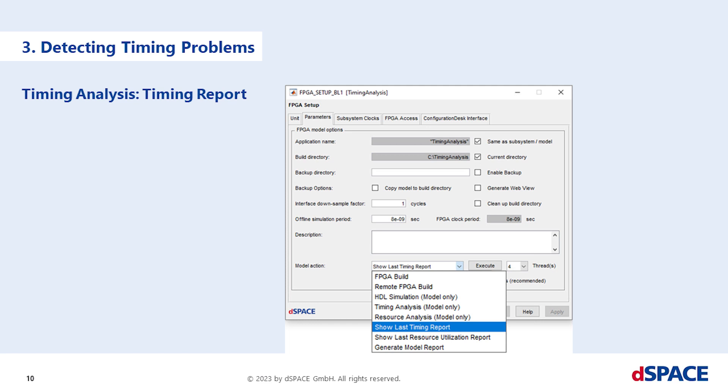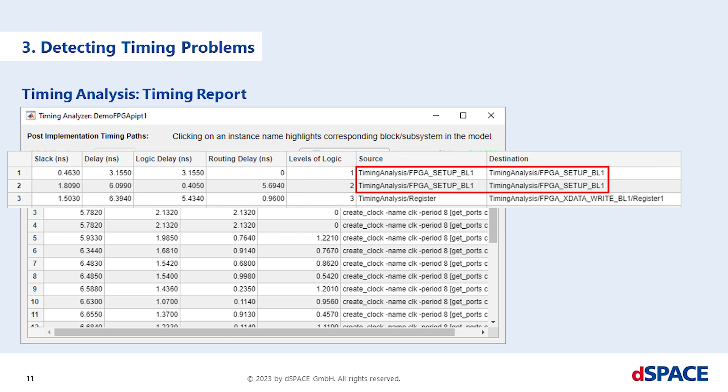To do this, open the parameters page from the FPGA setup block dialog and execute show last timing reports. The timing report shows the timing paths. The timing report starts with the slowest timing path. The table shows the 50 signal paths where timing is tightest. To avoid the timing errors, you must ensure that the timing is not too tight. If a path delay is greater than the FPGA sample time, the actual path is marked in red.